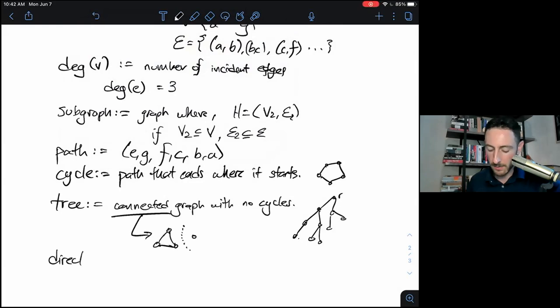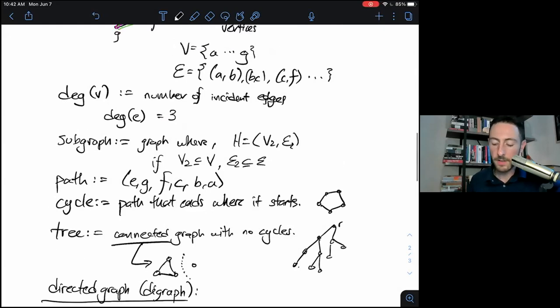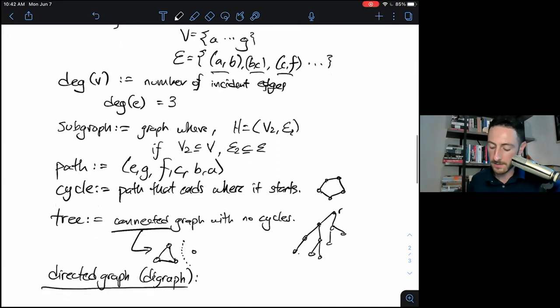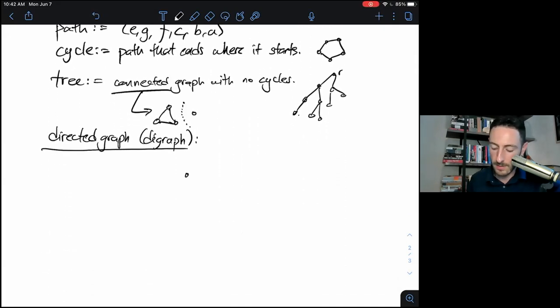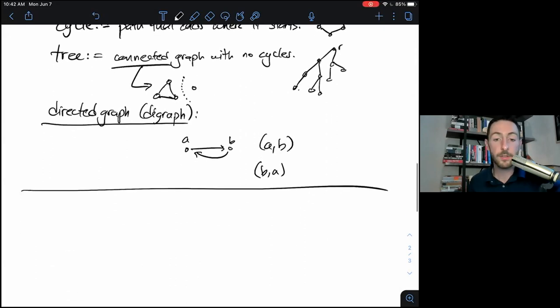And then finally, you can have a directed graph or digraph. And those of you who are really paying attention might have noticed, hey, when I defined edge set, I defined it as tuples, which are ordered rather than little sets. And that's because sometimes we want to define graph as a digraph. In this case, if I have a digraph with two vertices A and B, the edge AB is different from the edge BA, which is the edge backwards. And indeed, you can have both of those at the same time in a digraph.